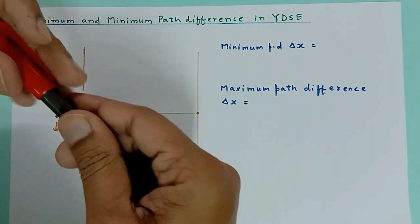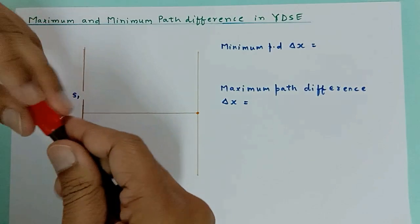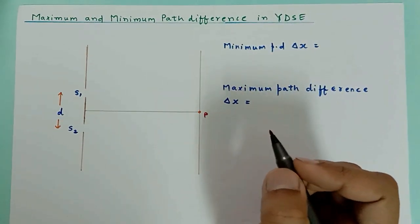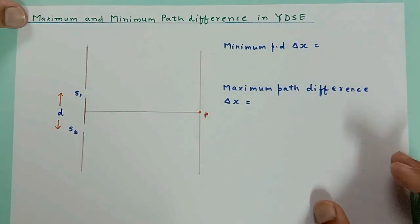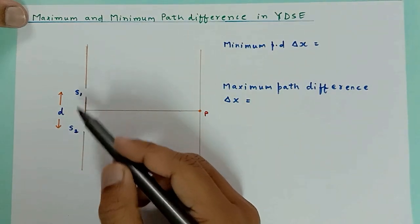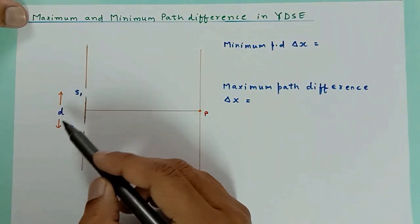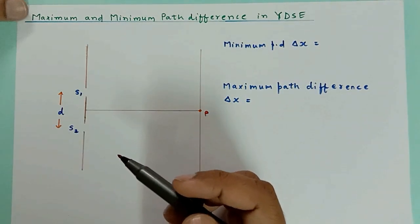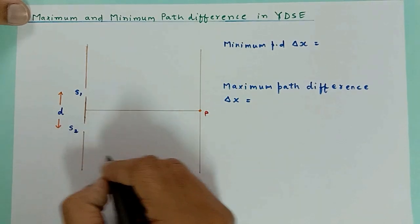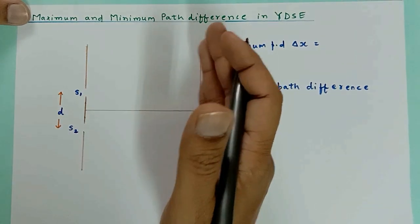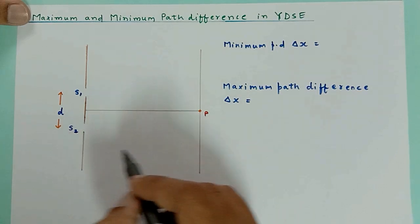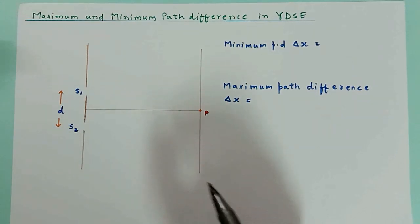Here we are given S1 and S2, two slits, and P is the center of the screen. The distance between S1 and S2 is small d, which is in millimeters, and the distance between the slits and the screen is capital D, which is in meters.